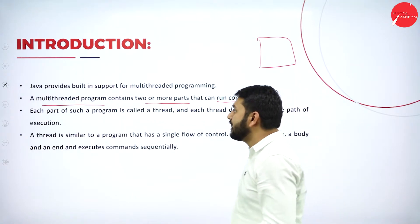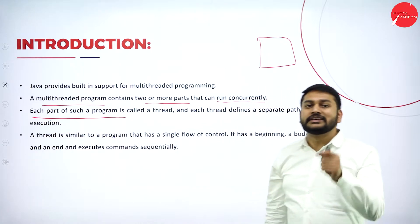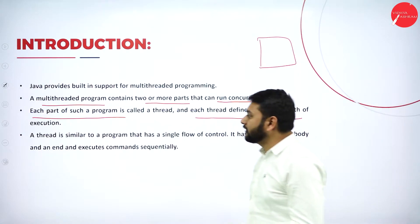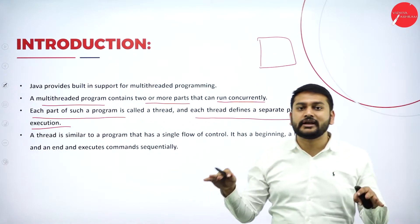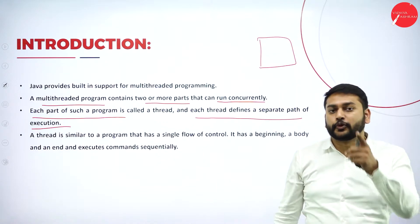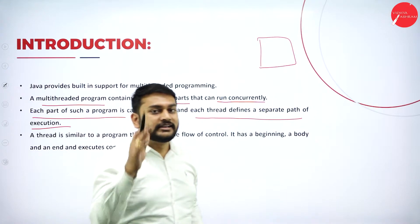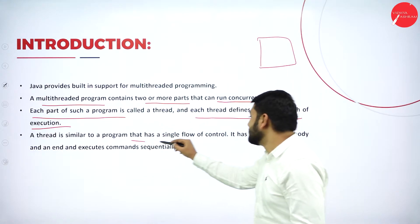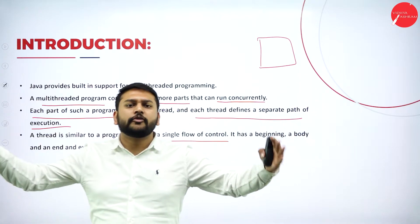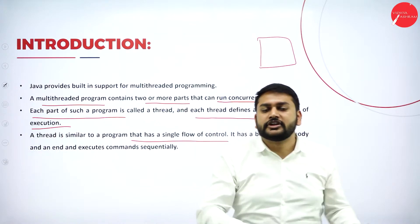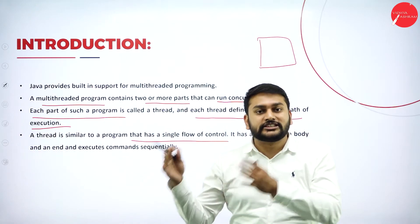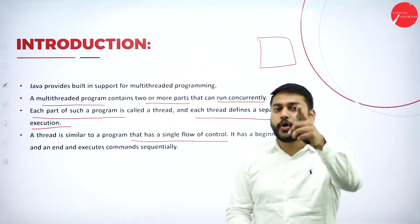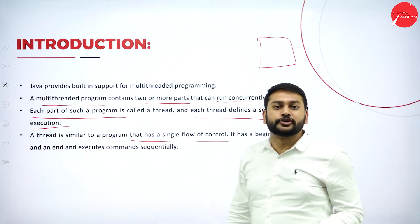Each part of such a program is called a thread. Each thread defines a separate path of execution, and it independently executes its separate part of the program. A thread is similar to a program that has a single flow control. In a big program with different sub-parts, each sub-part executes parallelly, and the entity responsible for executing it is called a thread.